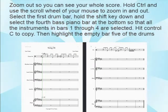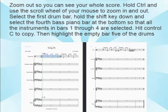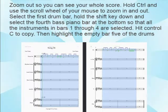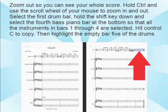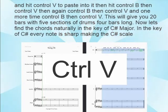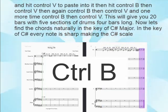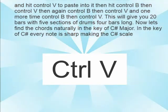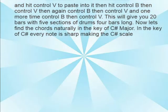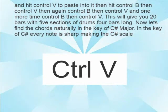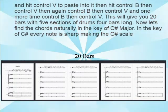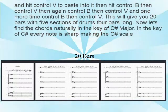Zoom out to see your whole score. Hold Ctrl and use the scroll wheel to zoom in and out. Select the first drum bar, hold Shift and select the fourth bass piano bar so that all instruments in bars one through four are selected. Hit Ctrl+C to copy, then highlight the empty five bars of the drums and hit Ctrl+V to paste. Then hit Ctrl+B, then Ctrl+V repeatedly to build up the score. This will give you twenty bars with five sections of drums four bars long.